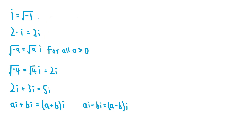In the previous video, we established that the imaginary number i is equal to the square root of negative 1. We can also multiply a real number with the imaginary number i to get another imaginary number, and we can rewrite square roots of negative real numbers as imaginary numbers with the formula: the square root of negative a equals the square root of a times i, for all a greater than zero.